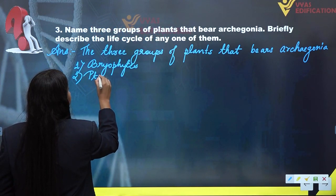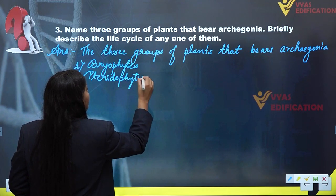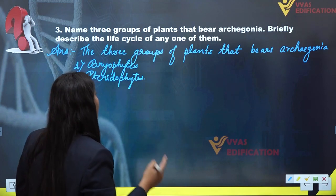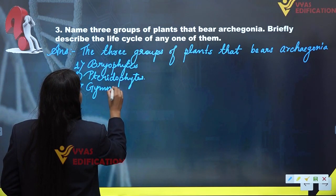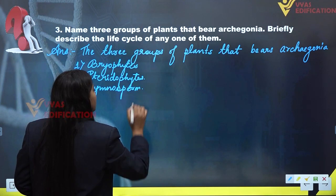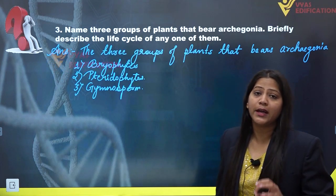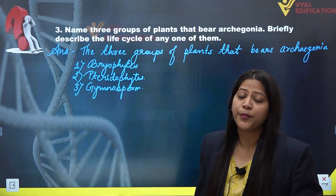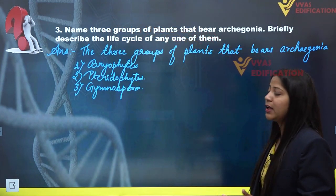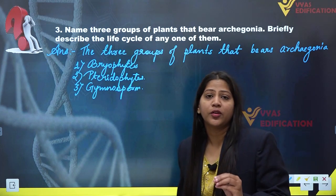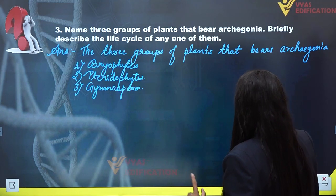Bryophytes contain archegonia as their female sex organ. Along with this we have pteridophytes, which also contain archegonia. The last one is gymnosperms — being advanced plants, they still contain archegonia as their female sex organ. So these three groups all contain archegonia, the female sex organ that produces egg cells.